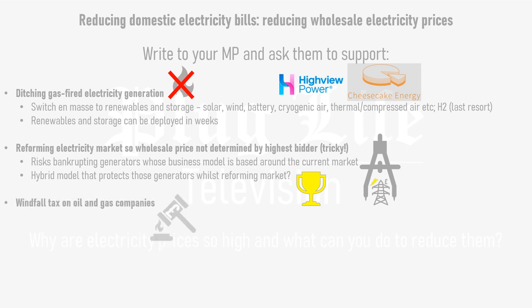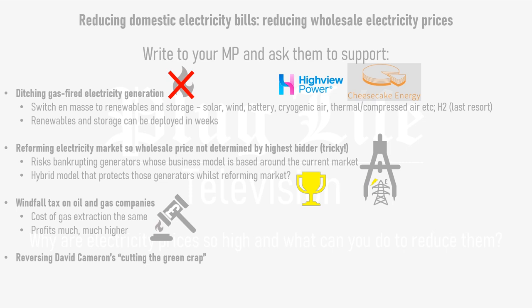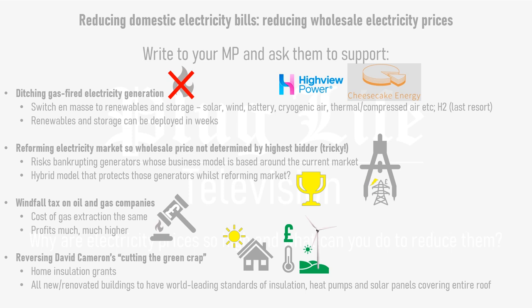A big win for electricity bills would be a windfall tax on oil and gas, since the cost of extracting gas from the North Sea hasn't gone up but wholesale gas prices definitely have, with oil and gas companies enjoying a huge surge in profits as a result. Finally, press your MP to undo the damage done by David Cameron's cutting the green crap back in 2013. Re-introduce ambitious grants, let alone loans, for insulation and mandate that all new and renovated buildings should be built to world-leading standards of insulation, with heat pumps providing heating and hot water and solar panels covering the entire roof. Undoing the damage of 2013 would also see planning regulations changed in England so that they are no longer hostile towards onshore wind, which is the cheapest form of electricity generation and consistently very popular in polls — making it a win-win for reducing electricity prices.